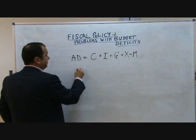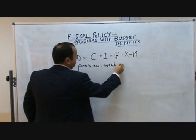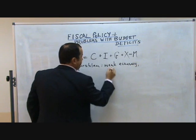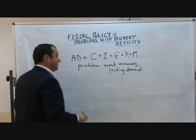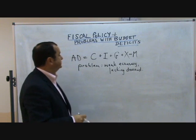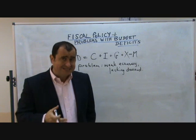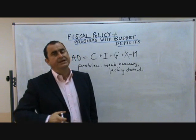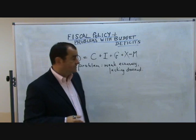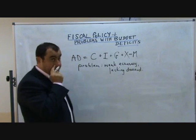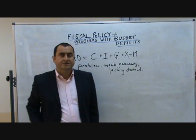Let's imagine the problem facing the government is a weak economy lacking demand. One thing the government might do is loosen its fiscal policy — that would mean raising government spending or cutting tax so that people have more disposable income and can spend more, raising consumption, or both. This would boost aggregate demand, leading on a diagram to a shift out of aggregate demand to a higher output level, hopefully creating jobs.